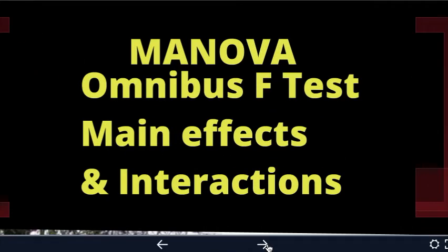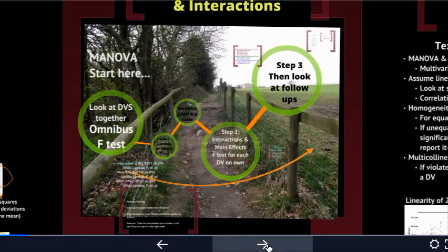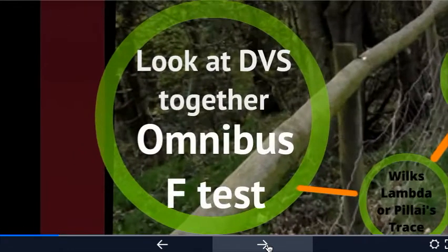What we're looking at today is the omnibus F-test. This is the test for the MANOVA with more than one dependent variable together. We're looking at main effects and interactions together. It's pretty much like a journey — you have to go in a certain order for it all to make sense and work. The first thing you need in your journey is to look at your dependent variables together, something often called the omnibus F-test.